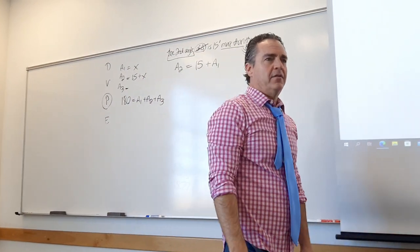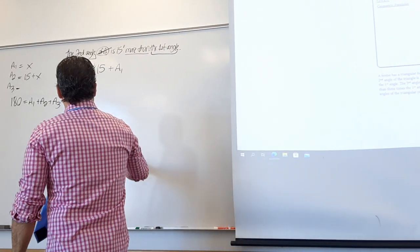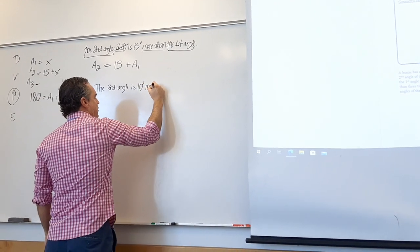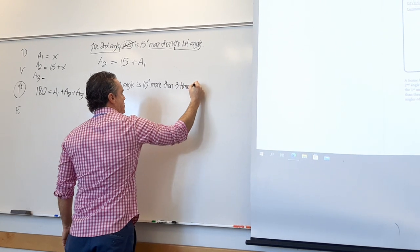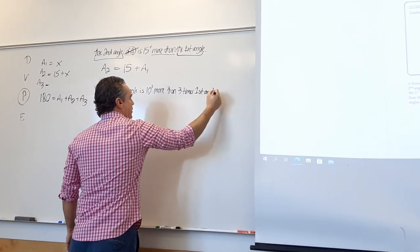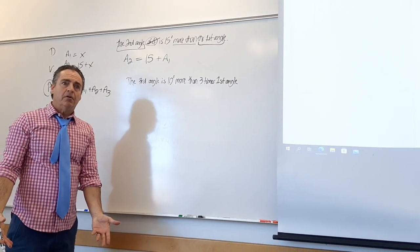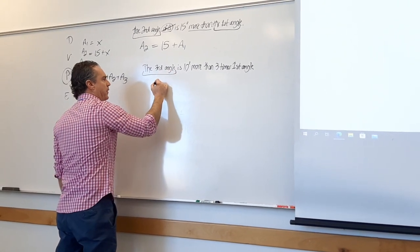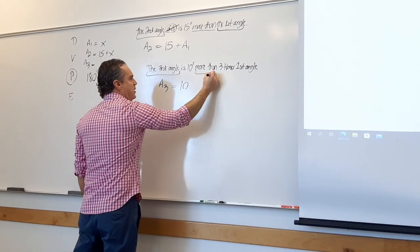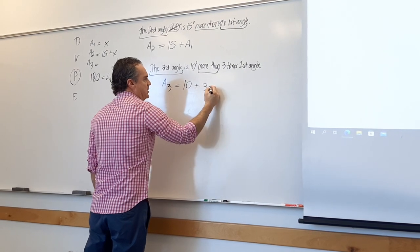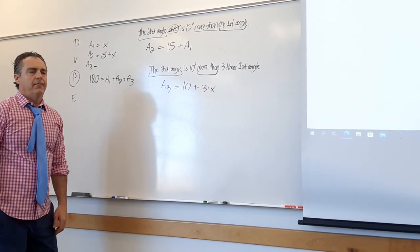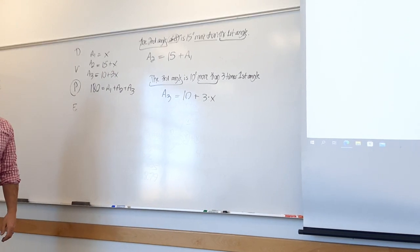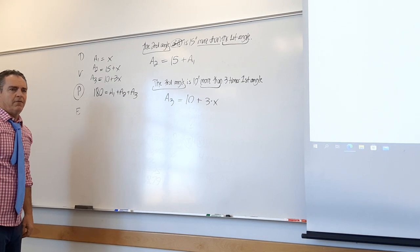D-V-P-E-R — R stands for reread. Find the angles — plural. Is x = 31 my final answer? No. Angle 1 equals 31. Angle 2 equals 31 plus 15, which equals 46. Angle 3 equals 10 plus 3 times 31, which equals 103. Good job — those are the angles.